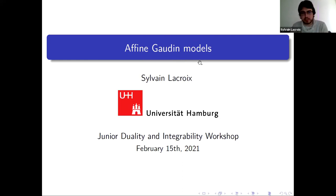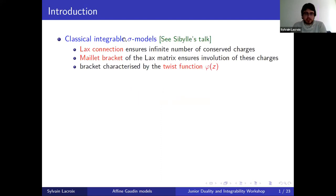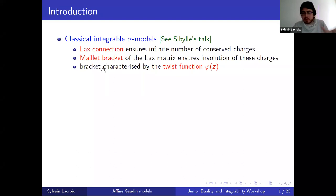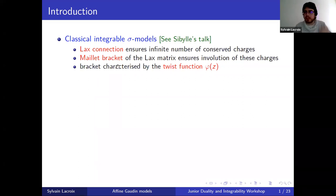In particular, I will explain how they are related to integrable sigma models. We've heard about integrable sigma models in the previous two talks, and in particular in Sibyl's talk we heard about their classical integrability, which relies on the existence of a Lax connection that ensures there is an infinite number of conserved charges. At the Hamiltonian level, we ask that the Lax matrix satisfies the Maillet bracket, which ensures that these charges are all in involution. This formalism — Maillet bracket with twist function — is what allows us to make the link with Affine Gaudin models.